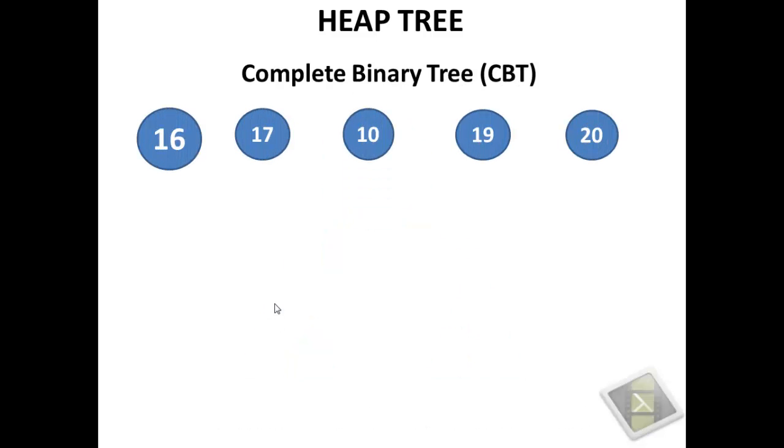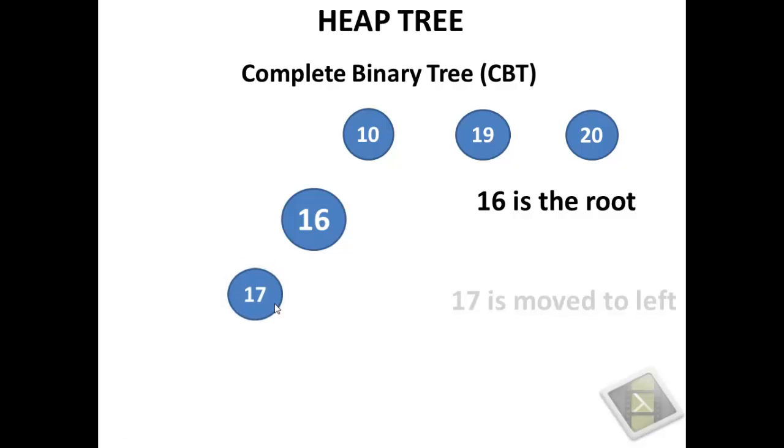On the other hand, complete binary tree. Complete binary tree is a tree in which all the levels of the tree are filled in from left to right. You can imagine it as a linear array where every new element is inserted at the very next available location.